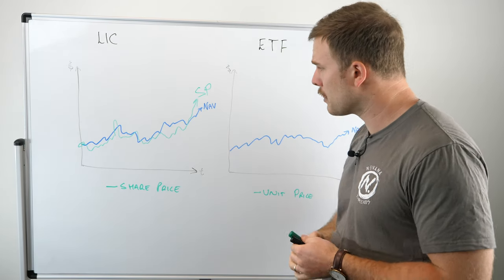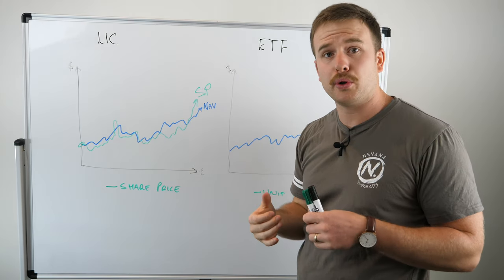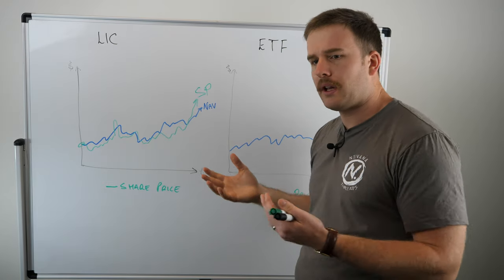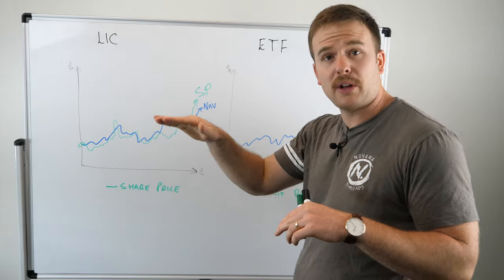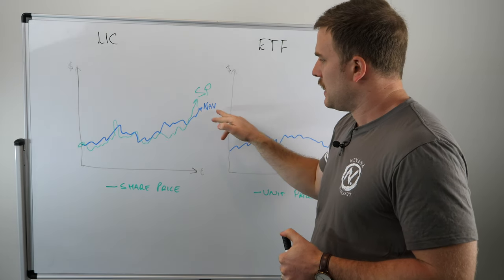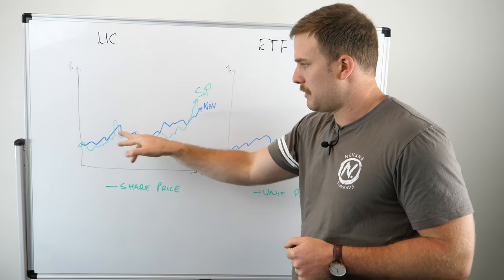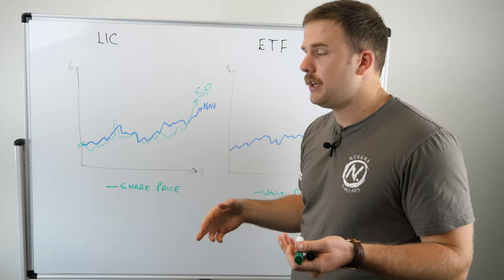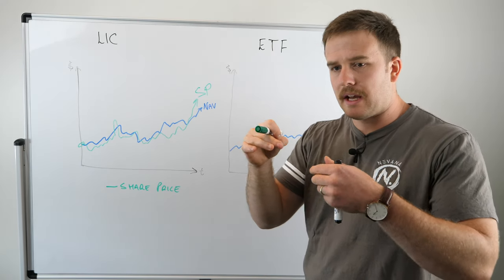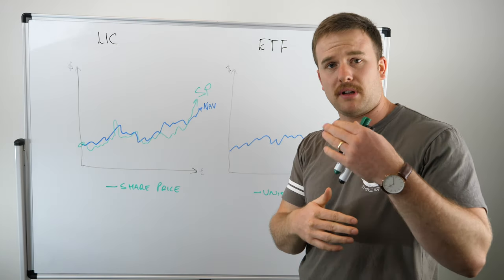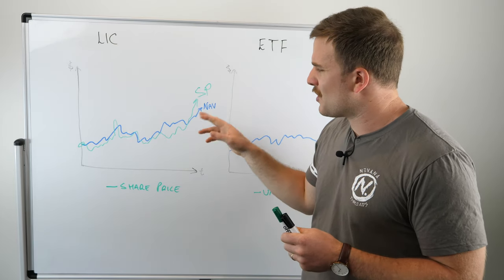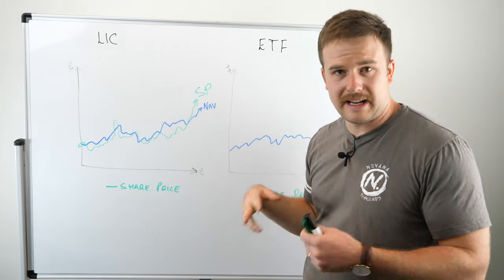But what can happen over time is that the value of the investments that the company makes, which is called the NAV or the net asset value, can deviate from the share price. You can see that this terribly drawn green line here is deviating from the blue line. The share price is different to the value of the investments that are inside the LIC. Why would that happen?